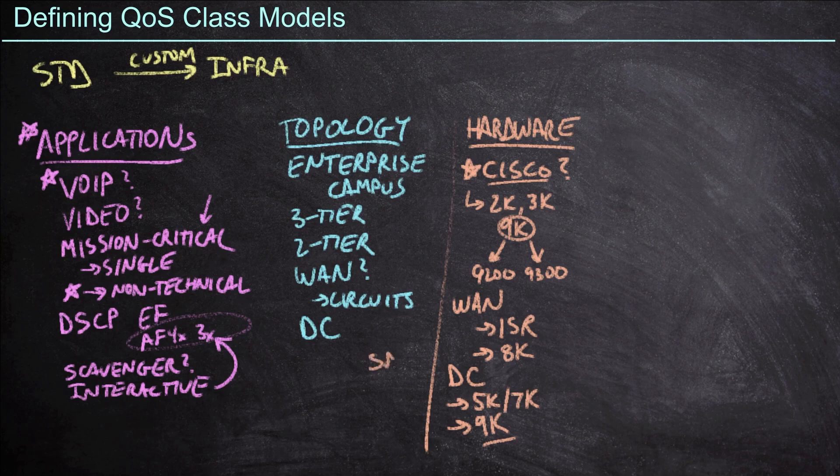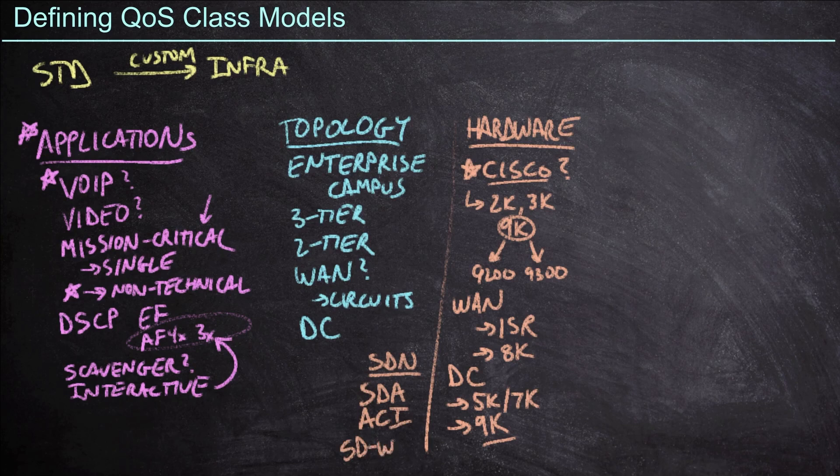And by the way, life gets even more exciting when we add software-defined networking solutions into the mix. For example, Cisco's Software-Defined Access, or SDA, built on DNA Center, that would definitely affect our campus deployments. And then we have Application-Centric Infrastructure, ACI, in the data center. And it doesn't end there because Cisco has software-defined wide area networking. So our WAN environment, our data center environment, our campus environment, our QoS deployments could all be dictated by what solution we have deployed, whether it's a traditional architecture or software-defined networking.